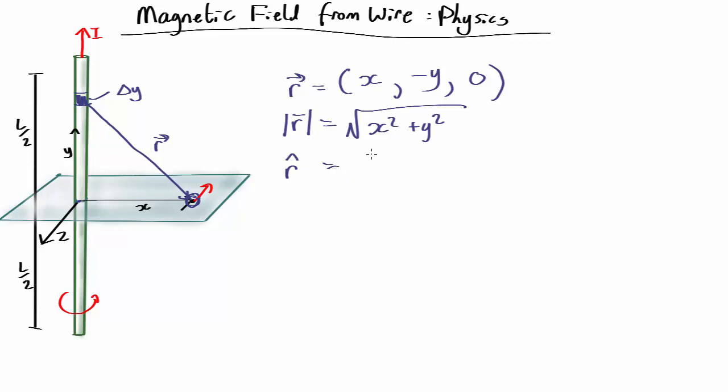So it's x, minus y, zero, all over root x squared plus y squared.